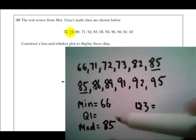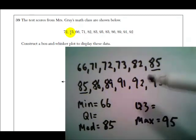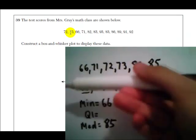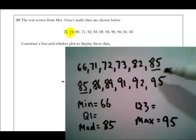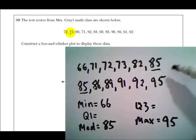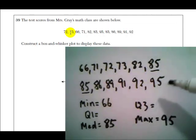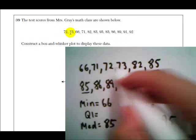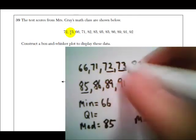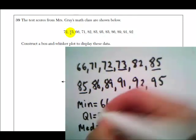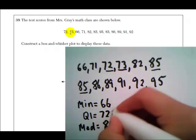Now, the first quartile is the median of the first half of numbers. So if we just look at this first line here, 66 to 85, what's the median of these six numbers? Well, once again, they're an even number of numbers. So we're going to look at the two numbers that are closest to the middle, 72 and 73. And we're going to take the average of them. And those two numbers have an average of 72.5.